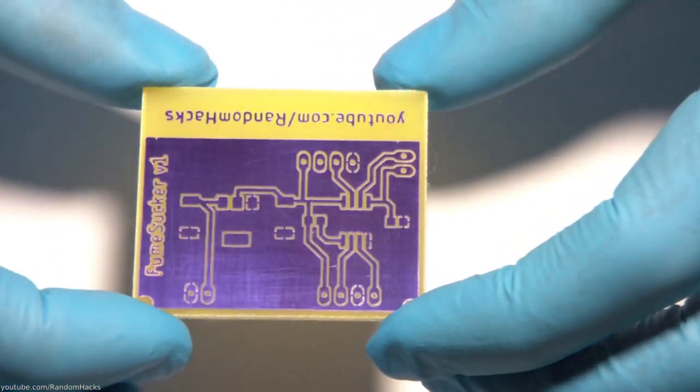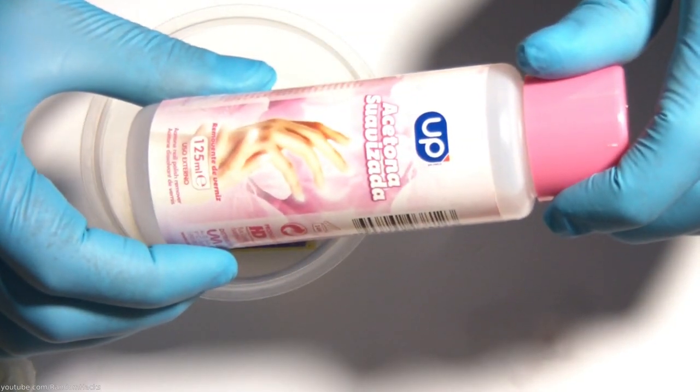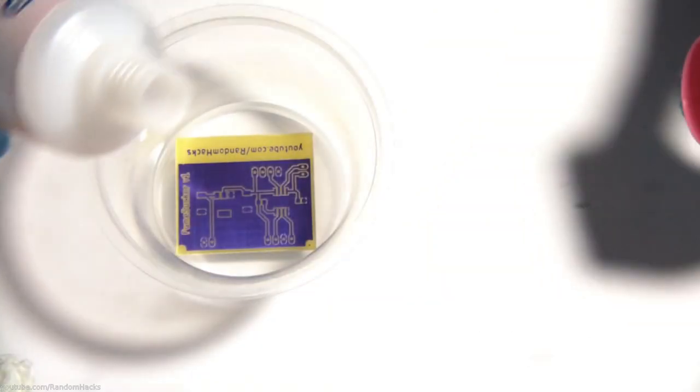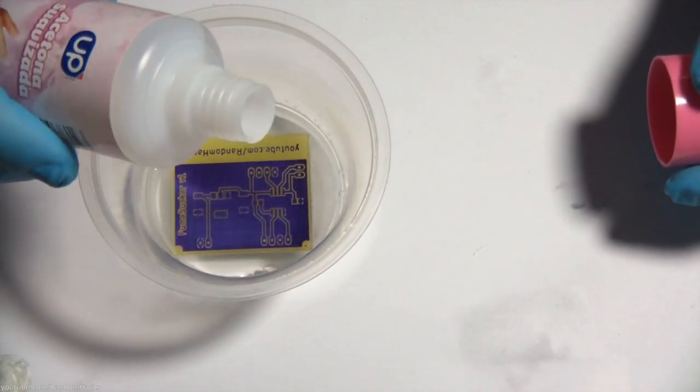To do so I need acetone. I don't recommend using cheap nail varnish remover, but instead get a proper pure acetone from the hardware store, as the dry film should come right off by itself in just a few seconds.